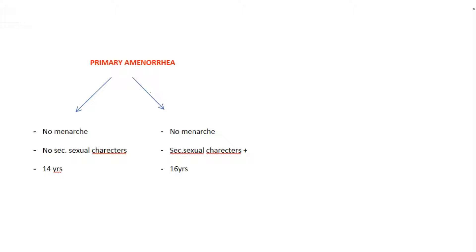Primary amenorrhea has two definitions. The first is absence of menstruation or absence of menarche, along with absence of secondary sexual characters, by the time a girl attains an age of 14 years. The second definition is absence of menstruation but presence of secondary sexual characters by the time a girl attains an age of 16 years. Secondary sexual characters means development of axillary hair, pubic hair, and development of breasts.